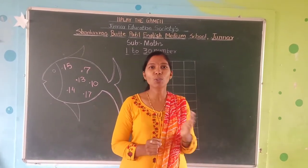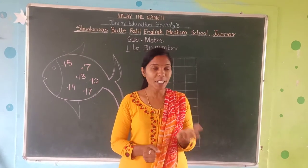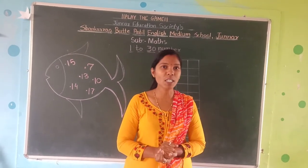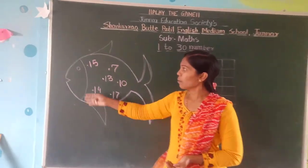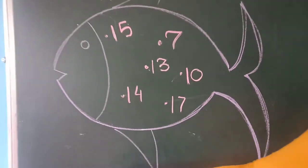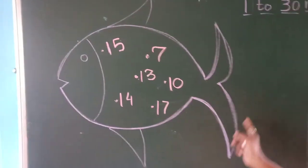So, you all are now 5 to 13 numbers. You can identify numbers. Ok students, now see here you have to identify some numbers. First tell me, which picture is this?